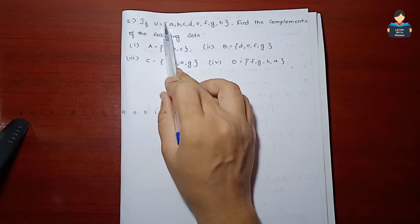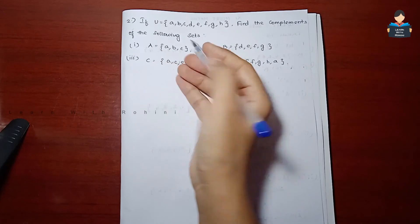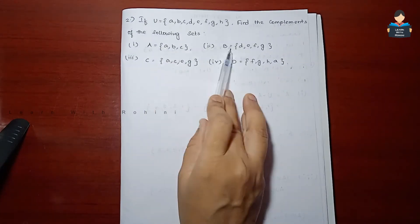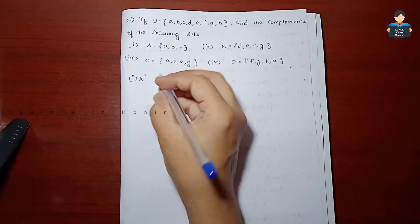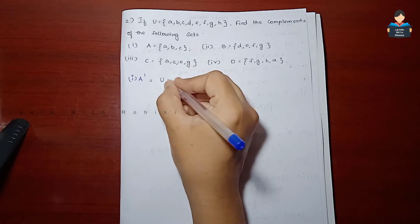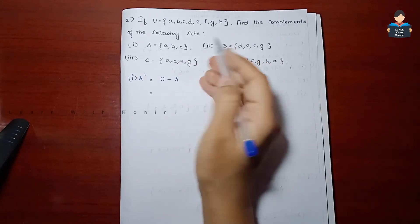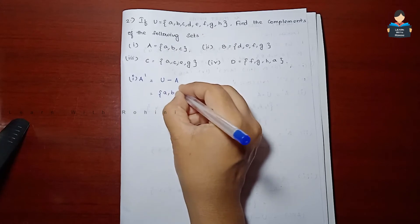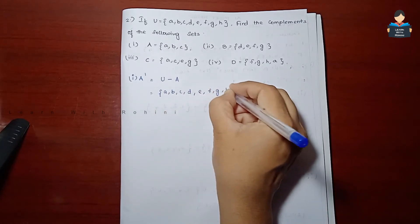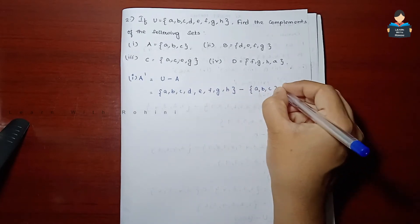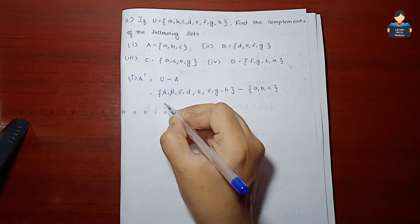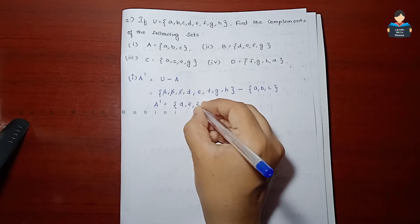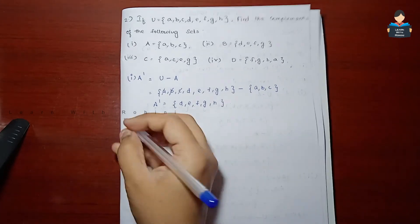Now the second sum. The Universal set is given — find the complements of the following sets. Second sum has subdivisions a, b, c, and d. First, A complement = U minus A. Universal set has elements A, B, C, D, E, F, G, H. Minus set — elements A, B, C. Strike out A, B, C which are common. A complement = {D, E, F, G, H}. Wait — remaining elements after striking A, B, C are F, G, H.